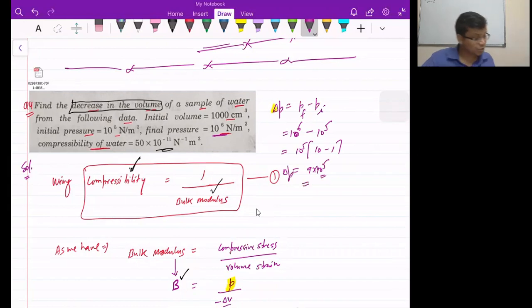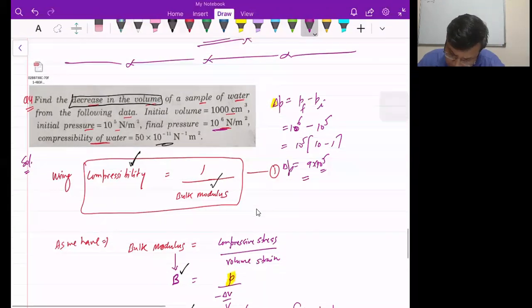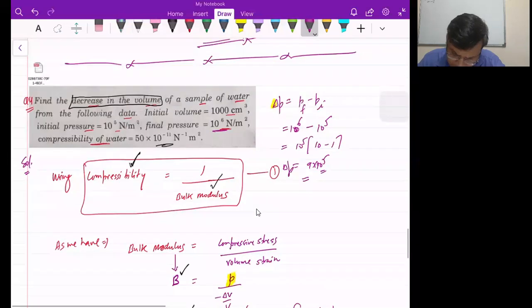And what we need is the volume. See the volume is given. Yes the volume is also given to us, this 1000 cm cube.